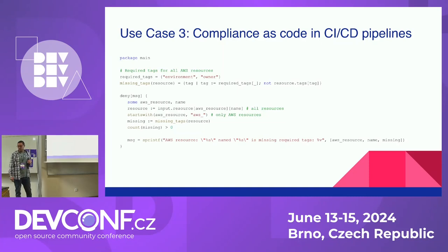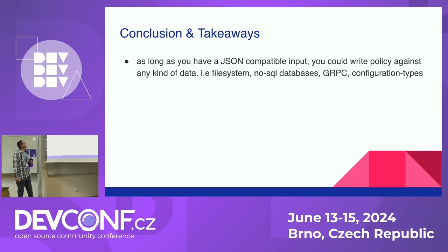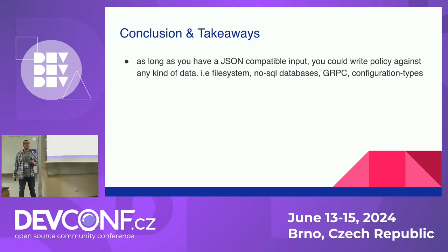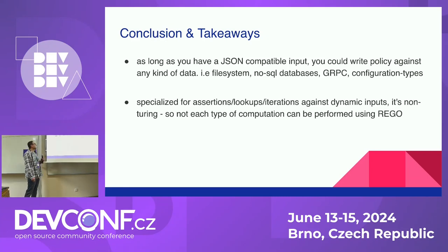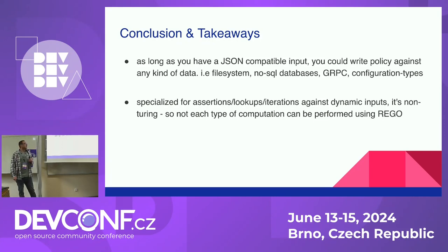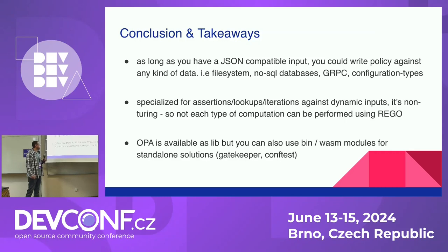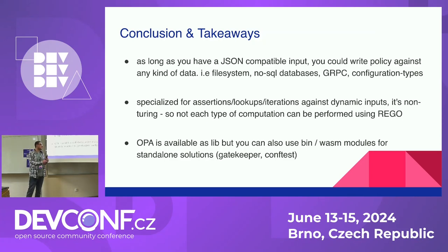Takeaways and conclusions: as long as you have a JSON-compatible input, you could write policy against any kind of data — file systems, NoSQL databases, gRPC, or any configuration type you can imagine. Rego is specialized for assertions, lookups, or iterations against dynamic inputs, but the important part is that it's non-Turing-complete, meaning not every type of computation can be performed using Rego — mostly assertions can be made. Finally, OPA is available as a library, but you can also use it as a binary or WebAssembly module for standalone solutions — which is the way Gatekeeper and ConfTest are doing it.